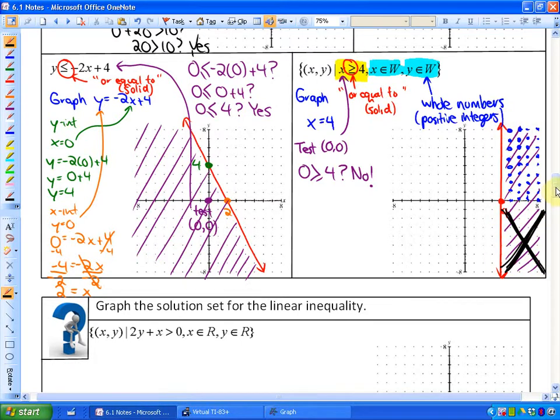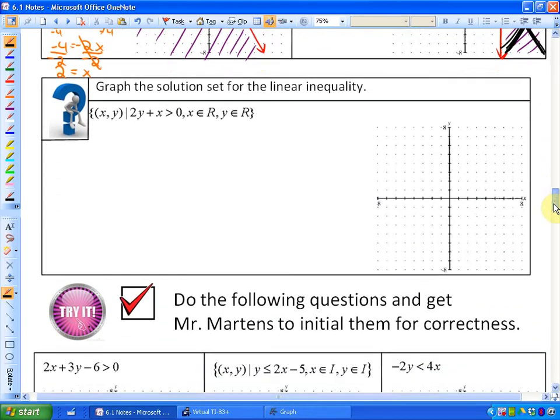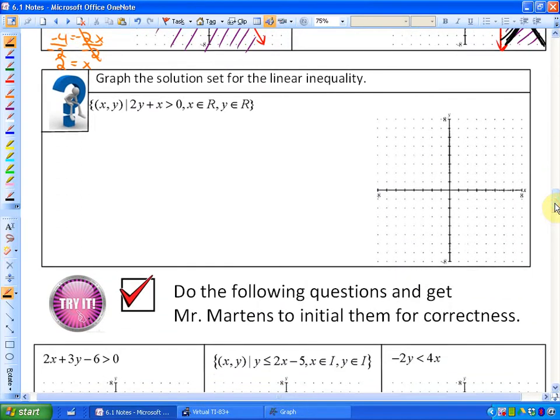Let's do one more example. Let's go ahead and graph the linear inequality. In this particular case, again, we're going to graph the boundary line. So we're going to graph where 2y plus x equals 0. So I'm going to get the y-intercept by substituting x equals 0. So we have 2y plus 0 equals 0, or 2y equals 0. If you divide by the coefficient 2, 0 divided by 2 is 0. So my y-intercept is 0.